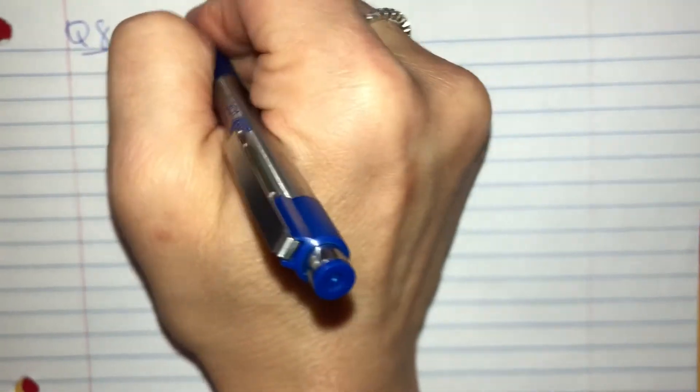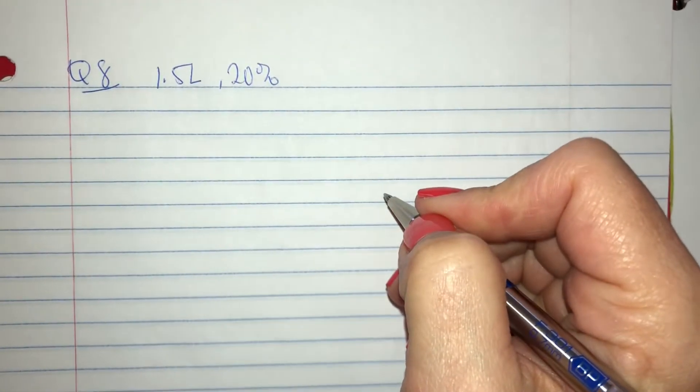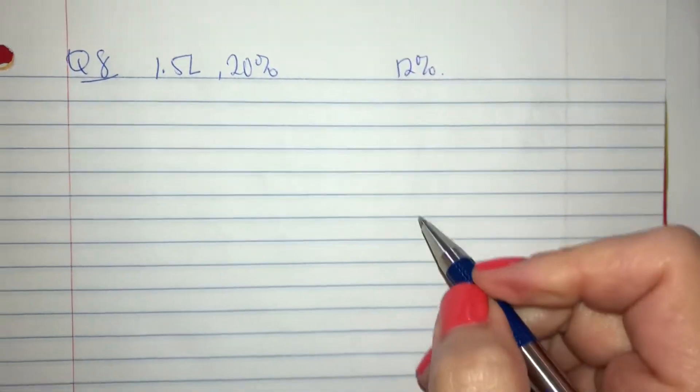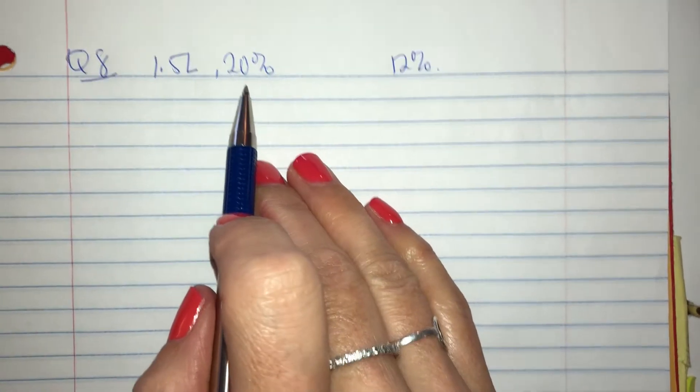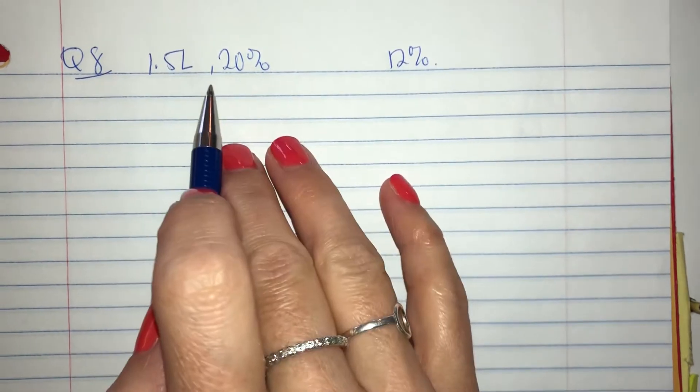you are handed a 1.5 liter bottle of 20% solution and you are asked to dilute it to a 12% solution and how much water do you end up adding in total to take all of this and turn it into this concentration?